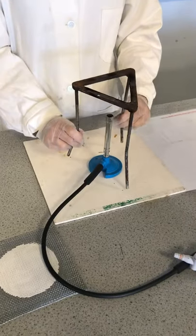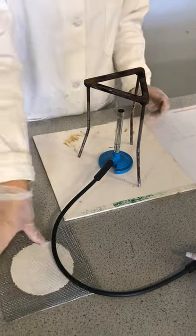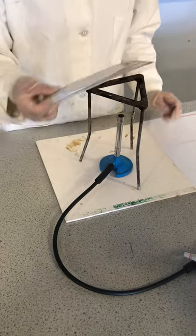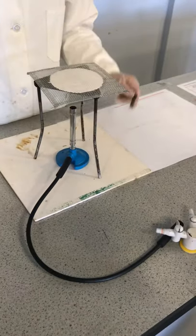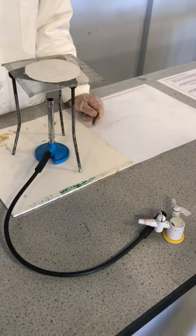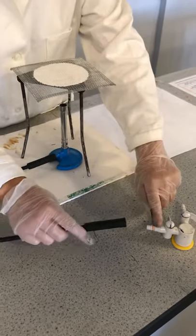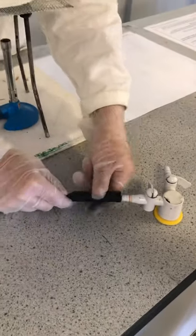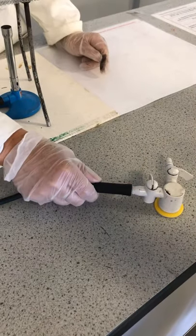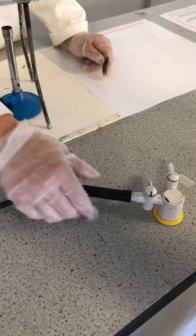Place the ceramic gauze on top of the tripod. Now we will connect the rubber tubing attached to the Bunsen burner to the gas tap. Make sure it is firmly connected and not loose.